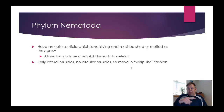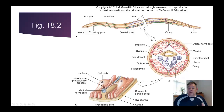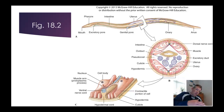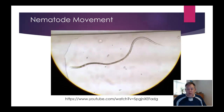Looking at this cross-section, go back and compare that to the earthworm cross-section. You can see these muscles that line the inside of that cuticle and just run the length of the worm. If you contract one side, the worm moves to that side; contract the other side, it moves the other way. That's the characteristic whip-like motion of a round worm.